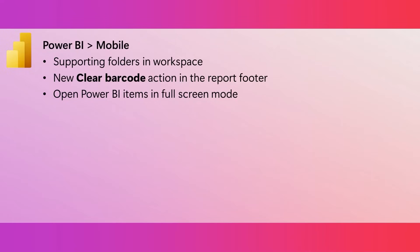Some of you have been using this barcode feature, but you told us you wanted it to be a little easier to clear out that barcode filter. Well now, in the report footer, we've added a button so that with just one click, you can clear out a previously scanned barcode and remove it from the filter. Using a Power BI mobile app, it's now possible to see a Power BI item in full screen. This is supported for both launch items and when using a universal link. A launch item is a Power BI item, like a report or a page, that a user selects to automatically open when the app opens — and now you can tell the Power BI mobile app to open this item in full screen mode.